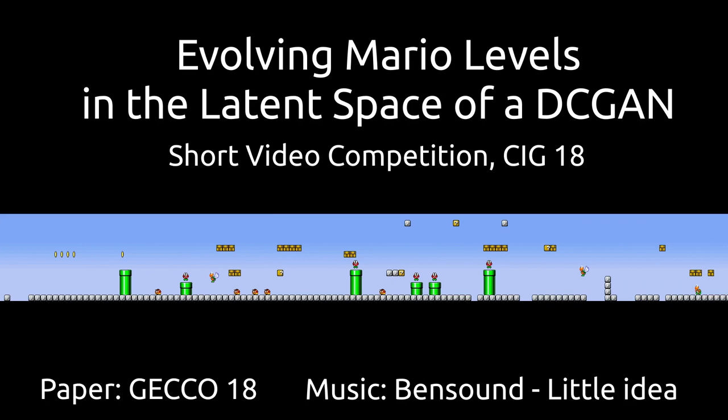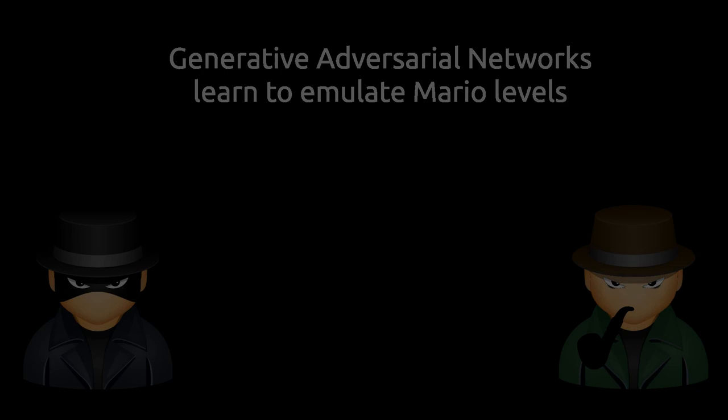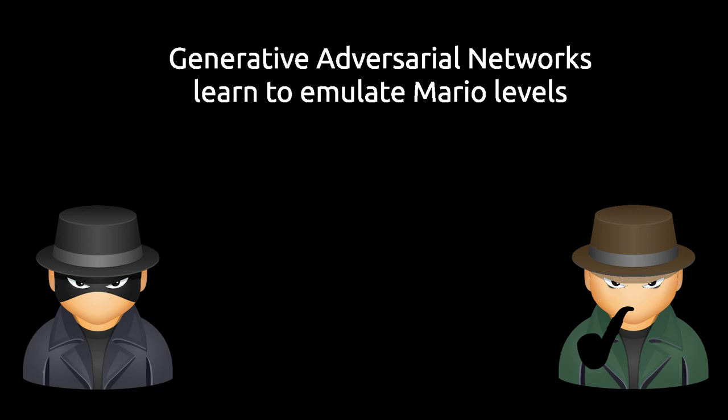The main contribution of this paper is a new method for controllable content generation. We used Mario, which you probably know, to demonstrate it. We used generative adversarial networks as generators for our Mario levels. However, they have to be trained on existing levels.